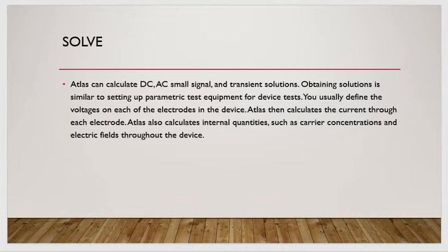ATLAS can calculate DC, AC small signal, and transient solutions. Obtaining a solution is similar to setting up parameter test equipment for device testing. You usually define the voltage on each electrode in the device. ATLAS then calculates the current through each electrode and also calculates internal quantities such as carrier concentration and electric field throughout the device.